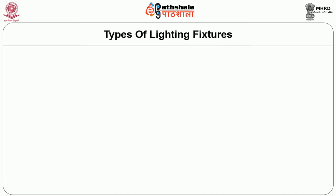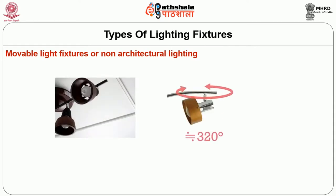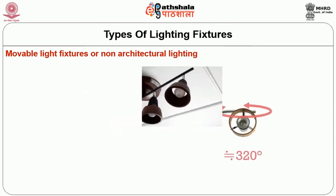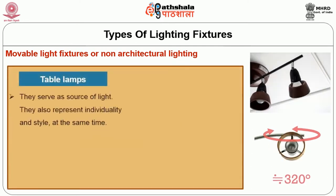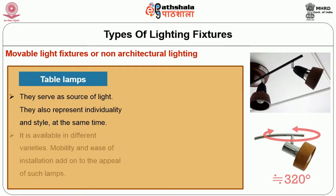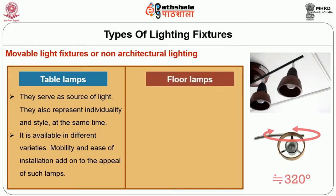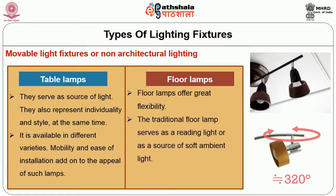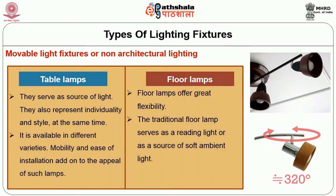Down lighters, up lighters, and wall washers can also become accent lights. Types of lighting fixtures: Movable or non-architectural lighting fixtures include table lamps, floor lamps, and small specialty lamps. They are easy to buy and easy to take along when one moves. Table lamps serve as a source of light, represent individuality and style, and are available in different varieties. Floor lamps offer great flexibility; the traditional floor lamp serves as a reading light or as a source of soft ambient light.